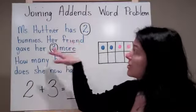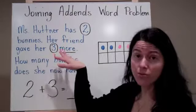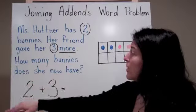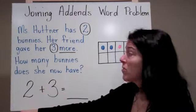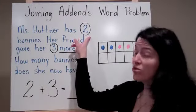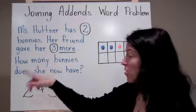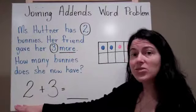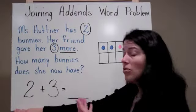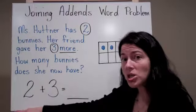Mrs. Hutner has two bunnies. Her friend gave her three more. How many bunnies does she have now? So I know that she started out with two bunnies and then she got three more. So I know that my equation is two plus three. But I don't know how many total bunnies she has.